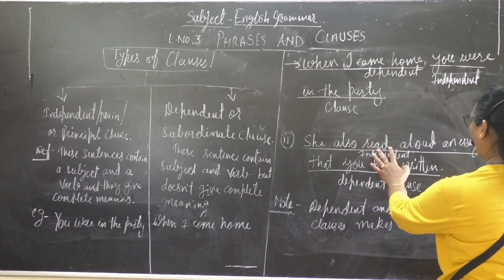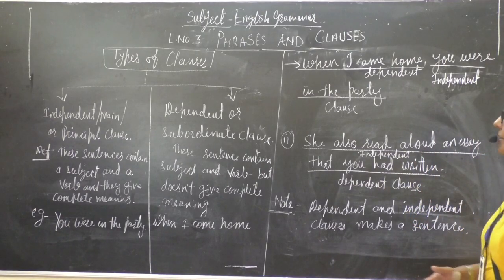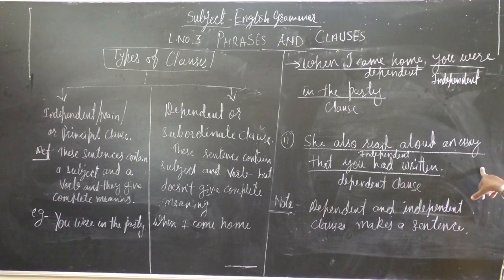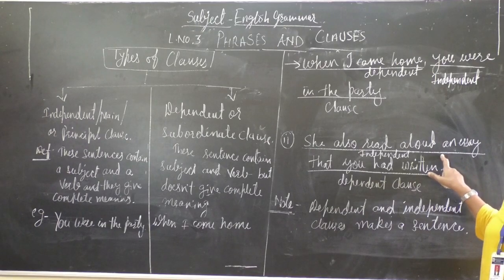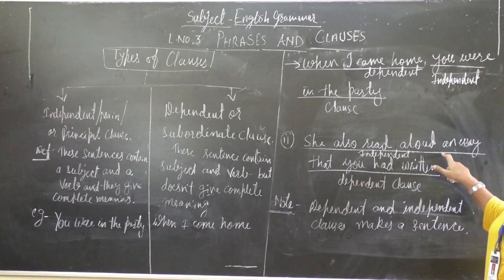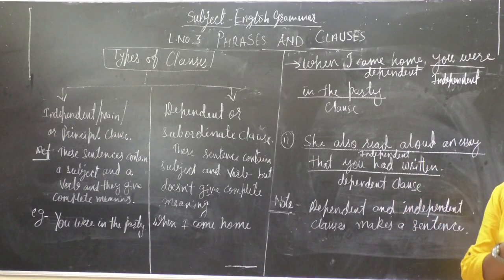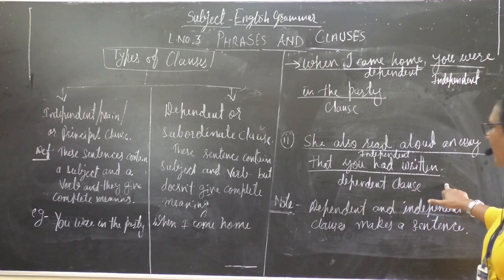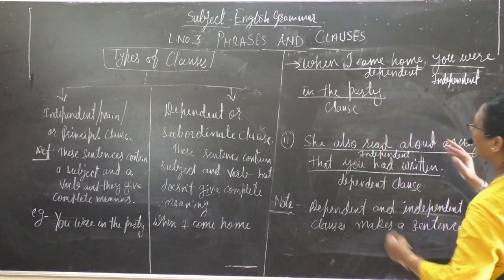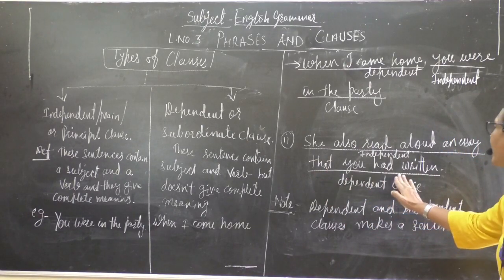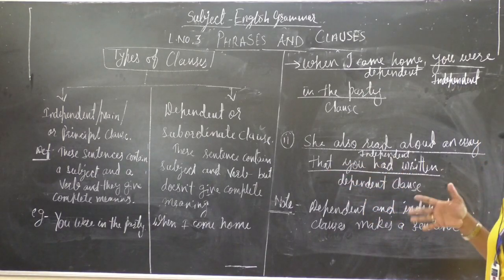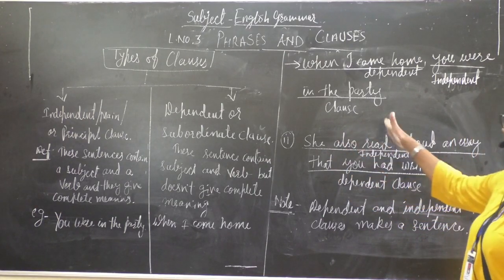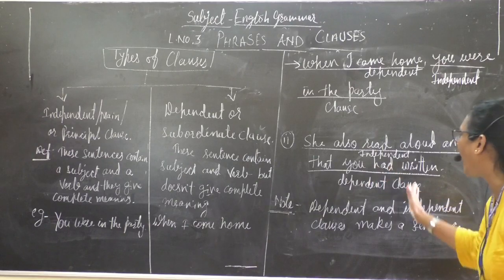Now see the second example: 'She also read aloud an essay.' This is an independent clause — it stands on its own, it is self-dependent. And the dependent clause is: 'that you had written.' So the full sentence is: 'She also read aloud an essay that you had written.'